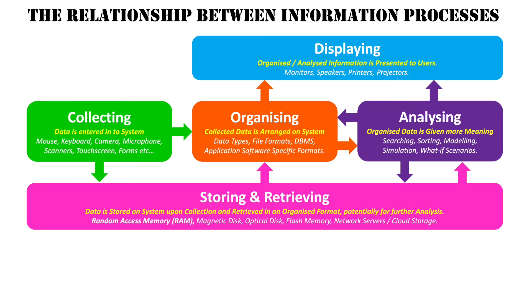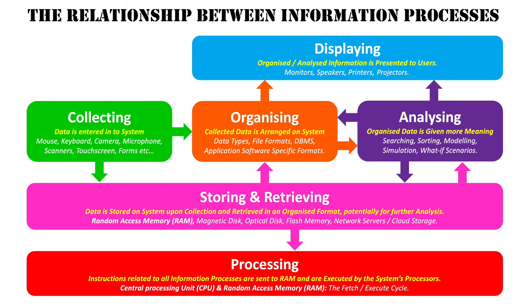Underlying all of this, going back to storing, retrieving, and RAM, is the information process of processing. Processing is important because instructions related to all information processes are sent to RAM and executed by the system's processor — in most cases the CPU, or possibly a multi-processed system. Through the fetch-execute cycle, instructions are sent from different parts of the system to RAM, go into the CPU where they're decoded and executed, and then sent back to RAM so the instruction can be acted upon. Processing relates to all other information processes.